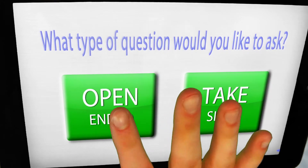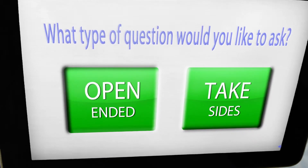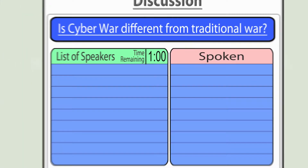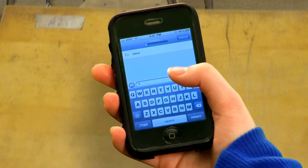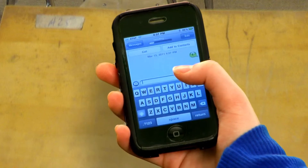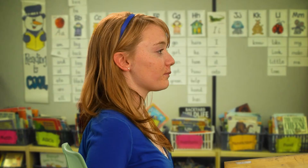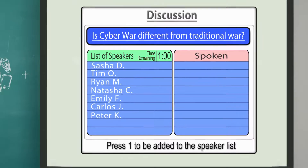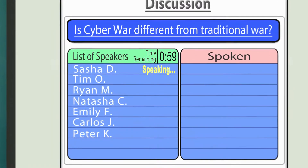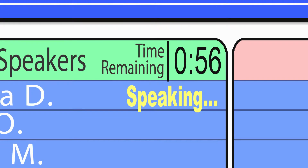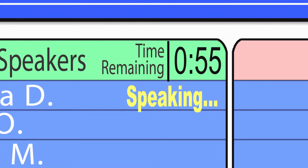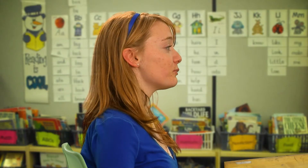She has decided to start with an open-ended question. This is what the kids will see. And then some kids will do this, and then this will happen, then this. 'So I think that if we let the president declare cyber war…' Oh good — there's always that timer. Sasha is brilliant, but she can go on and on and on.